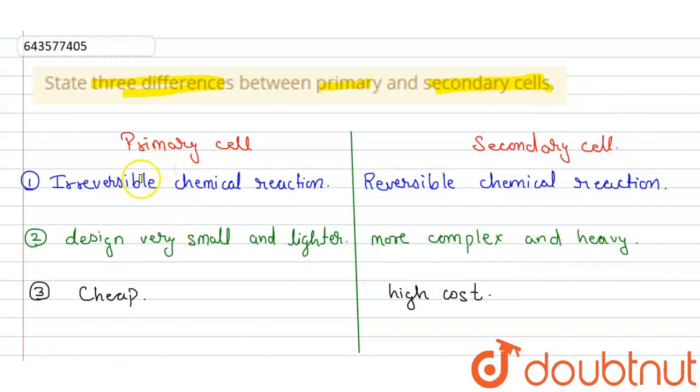And also the third point: in the primary cell, the primary cell is cheap, whereas the secondary cell is very high in cost. Okay, that's it. Thank you.